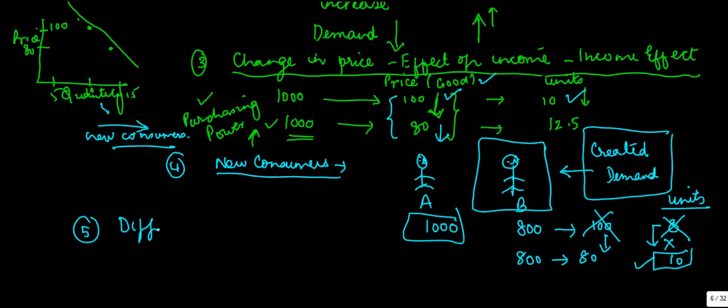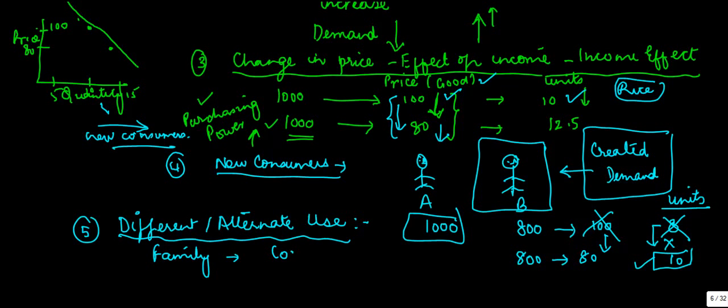And last one is different or alternate use. Now what happens is that when the price went down, let's take this case as the price of rice. When the price of rice went down, the family decided that till now we were just cooking rice and using it as it is. Now since the price has gone down, let us also use this to prepare dosas.